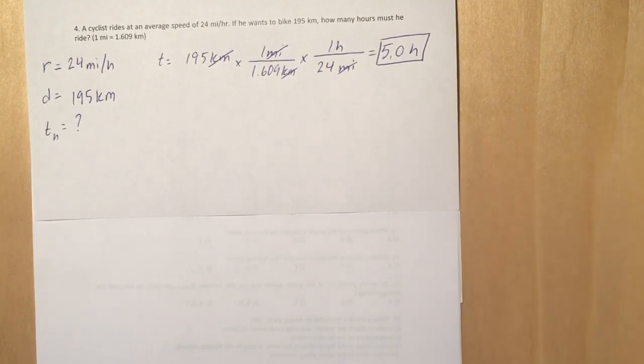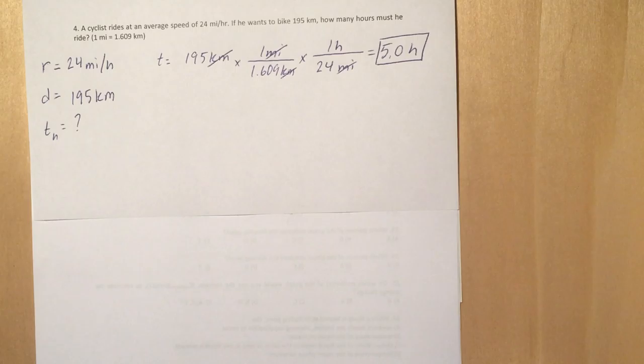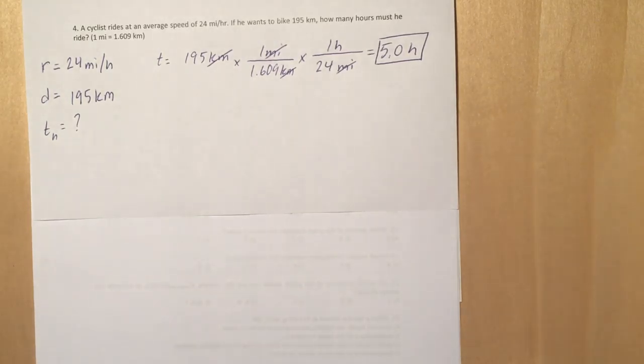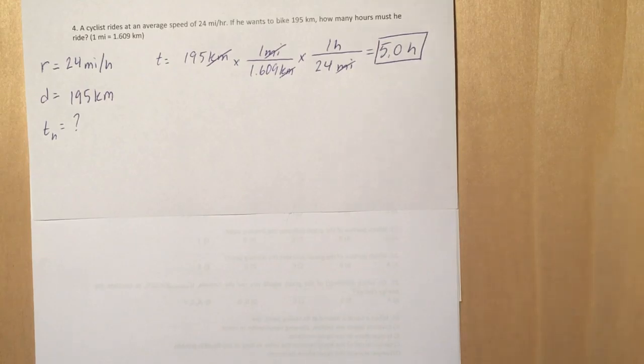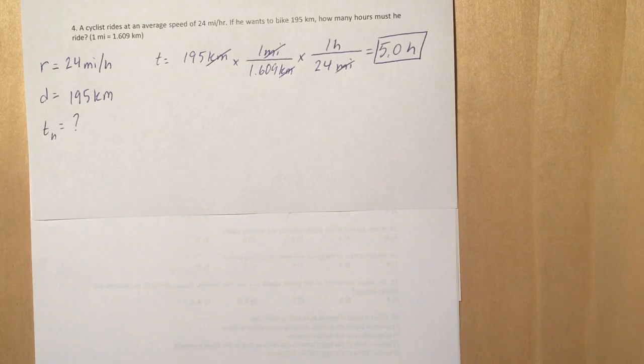We don't want miles, we want hours, and we have a conversion factor that takes those miles and converts them to hours, which is the rate. So you put the miles on the bottom, hours on the top, cancel those miles out.